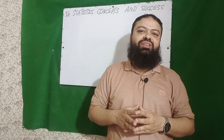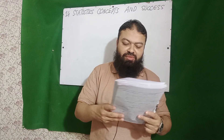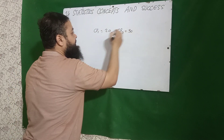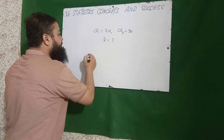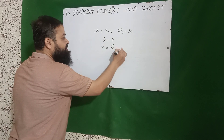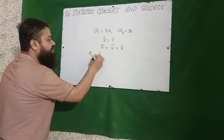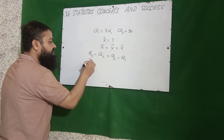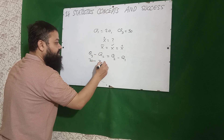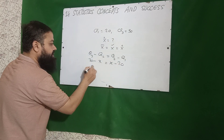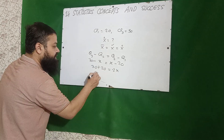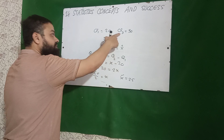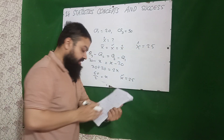Question number one: in a normal distribution, lower quartile Q1 is 20 and upper quartile Q3 is 30. Find the mode. We know in normal distribution, mean equals median equals mode. We use the formula Q3 minus Q2 equals Q2 minus Q1. Substituting: 30 minus x equals x minus 20, so 50 equals 2x, giving x equals 25. Therefore median equals 25, mean equals 25, and mode equals 25.